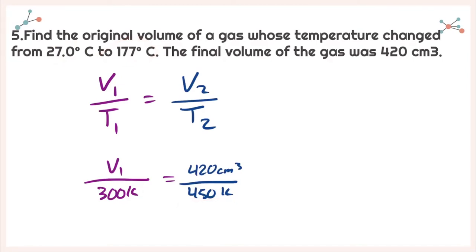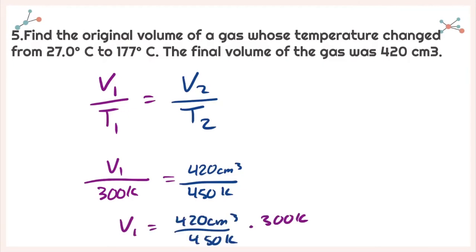Solving for V1, I get V1 equals 420 centimeters cubed over 450 Kelvin times 300 Kelvin. That gives me a new volume of 280 centimeters cubed.